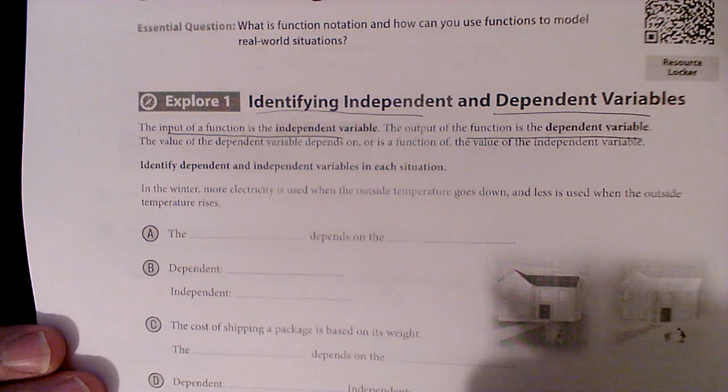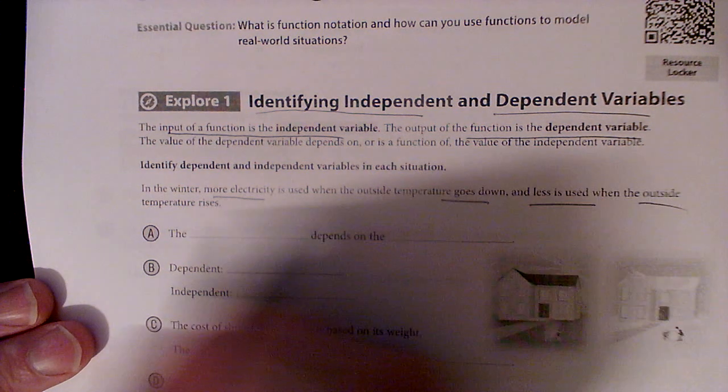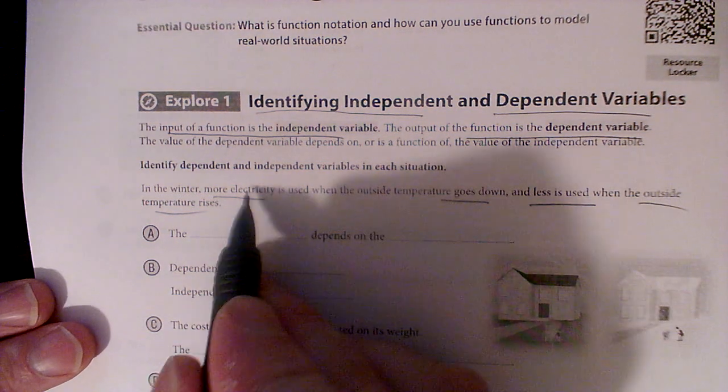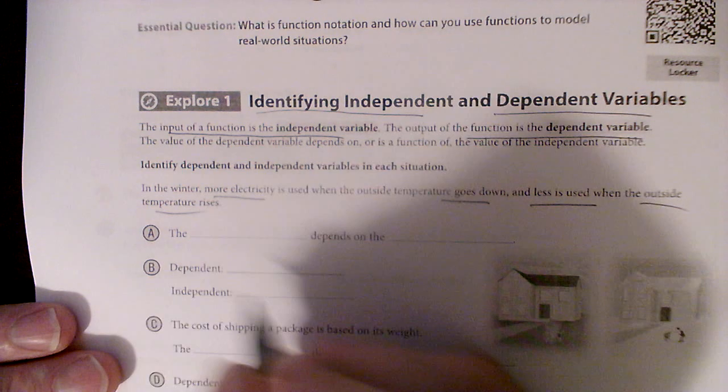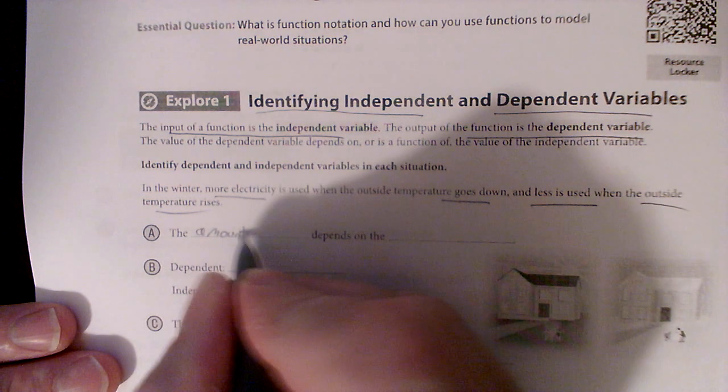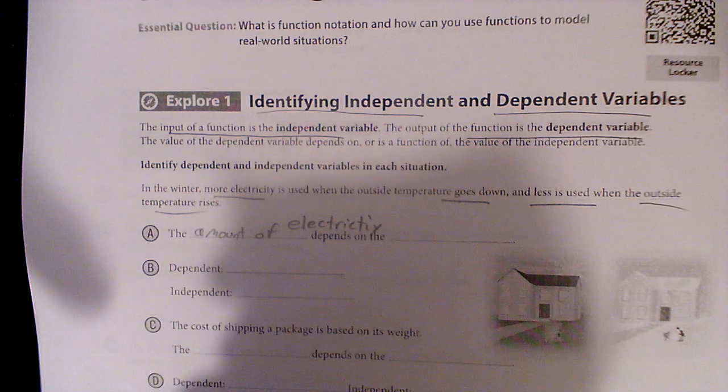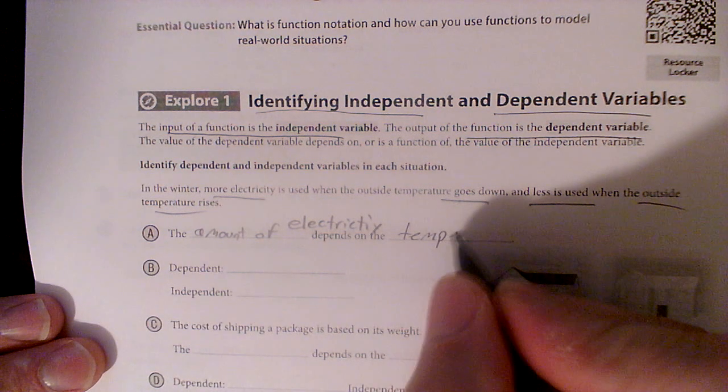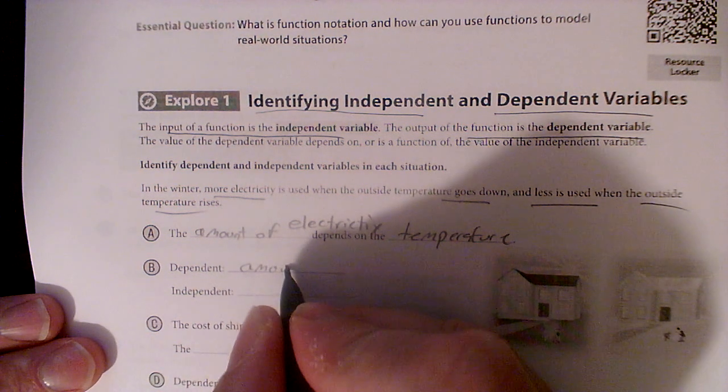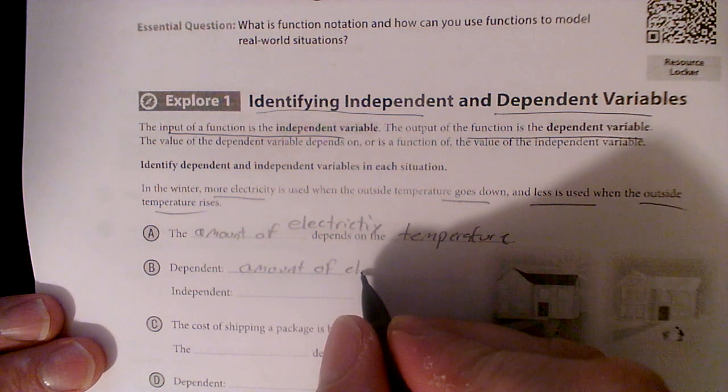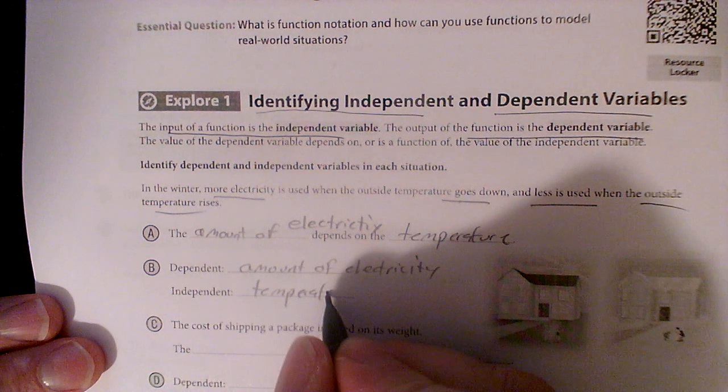Identifying dependent and independent variables in each situation. In the winter, more electricity is used when the outside temperature goes down, and less is used when the outside temperature rises. You can't change the temperature by using more electricity, but the temperature causes you to use more electricity. So the amount of electricity depends on the temperature. Your dependent variable is amount of electricity, and that depends on the temperature.